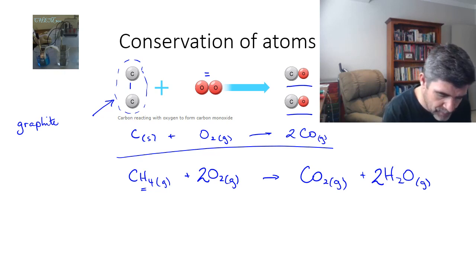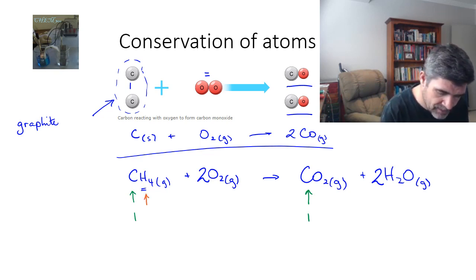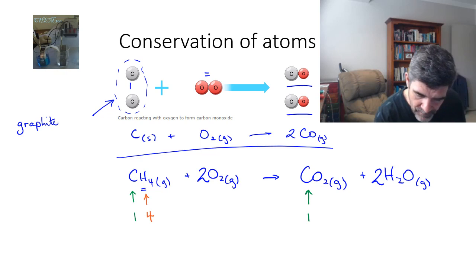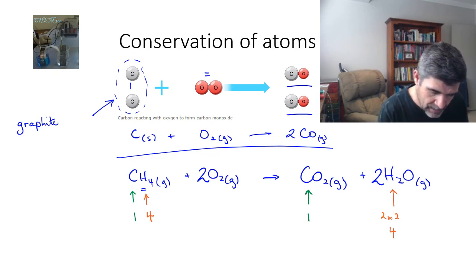Again if you go through and look at each of these atoms or elements individually, I have one atom of carbon. For hydrogen I have four.